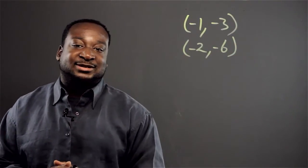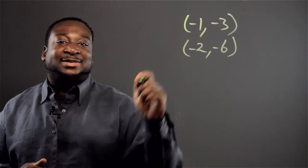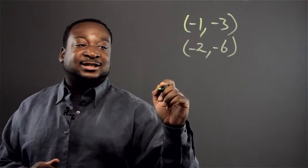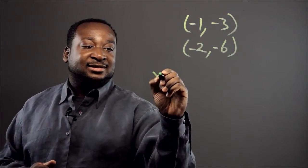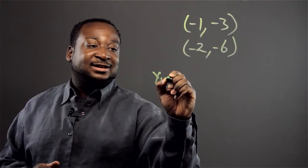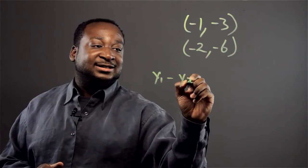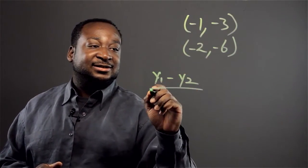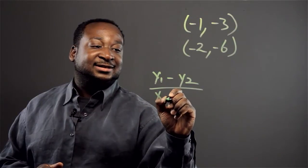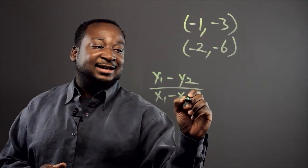Okay, all of these numbers are negative and basically use the same formula y sub 1 minus y sub 2 over x sub 1 minus x sub 2.